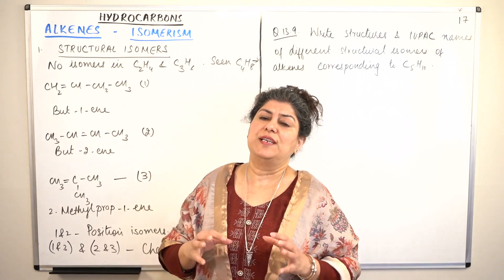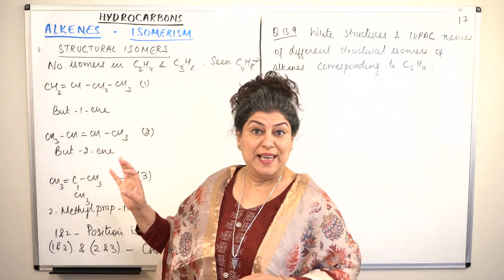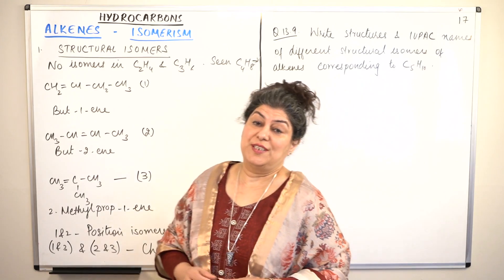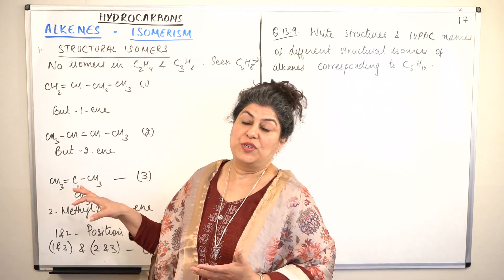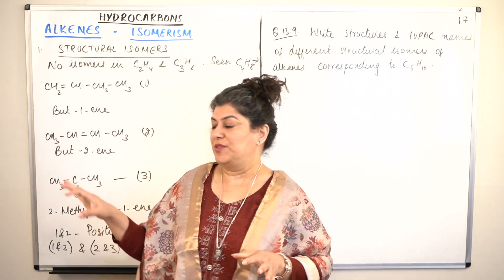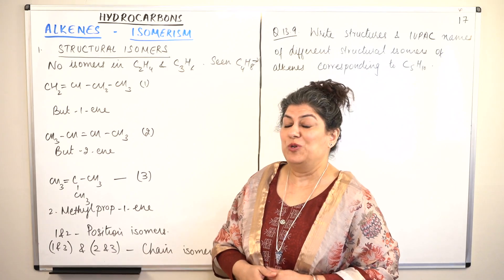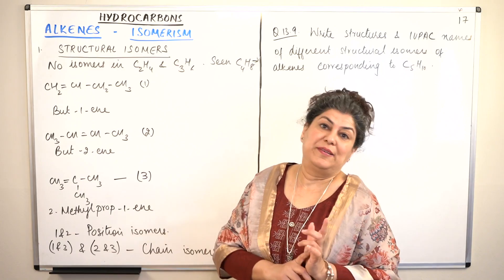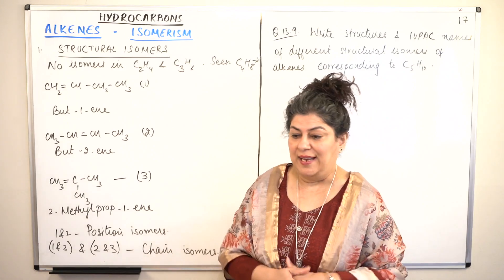We have studied isomers in detail in the previous chapter, and I also revised all of it when I explained the isomers in alkenes. I would suggest you go back to those videos and watch them before you come to this, because once you have a good foundation and understanding of what isomerisms are, this becomes easy to understand. We are going straight to discuss the isomers that are seen in alkenes.